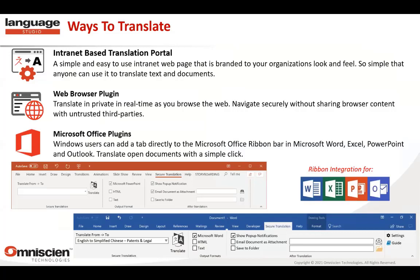Language Studio supports a portal, a web browser plugin just finalized that will be released shortly for browsing and translating in real time, and Microsoft Office plugins embedded directly into the toolbar. We're the only platform today that can translate at speeds comparable to Google. If you go to other systems like DeepL or Microsoft, you'll see much more delay — DeepL takes about 12 seconds to translate that block of text that we just translated in about a quarter of a second. Speed, if you need it, is there.